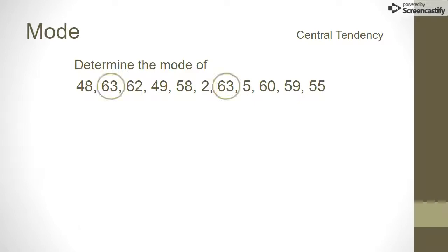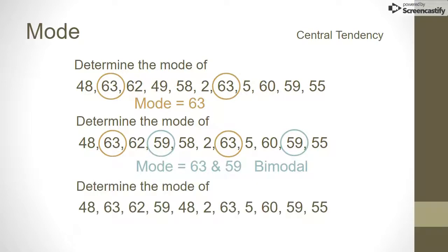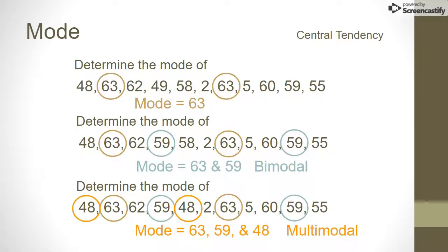In this example, the number 63 occurs twice and is the only measurement that's repeated, so the mode is 63. In this example, both 63 and 59 occur twice, so the mode is reported as 63 and 59 bimodal. In this example, 63, 59, and 48 each occur twice, so the mode is reported as 63, 59, and 48 multimodal.